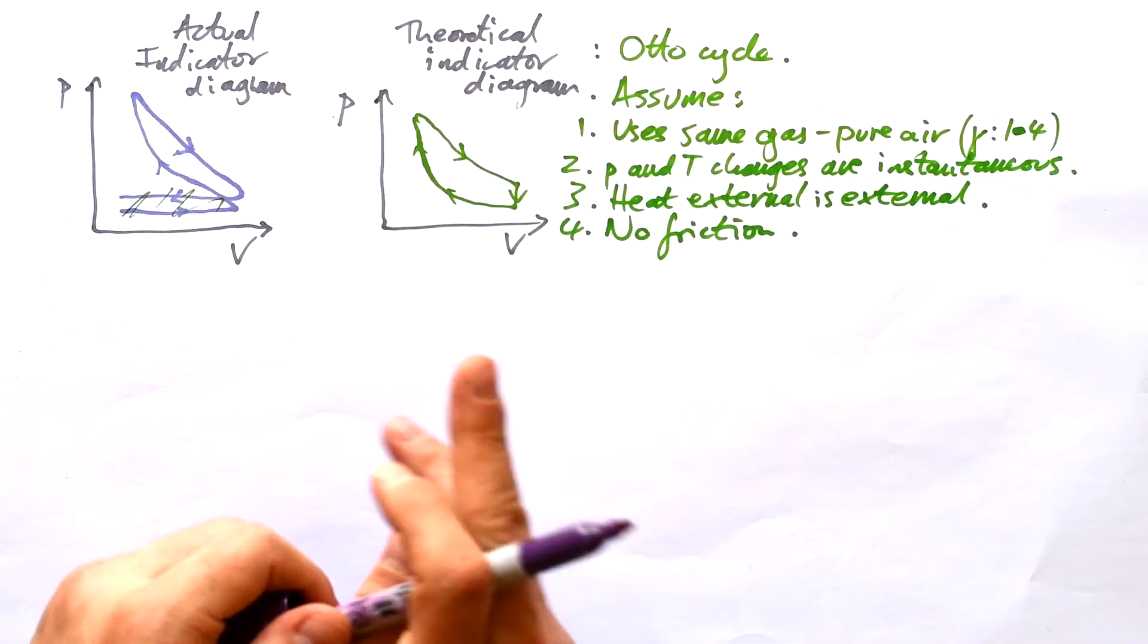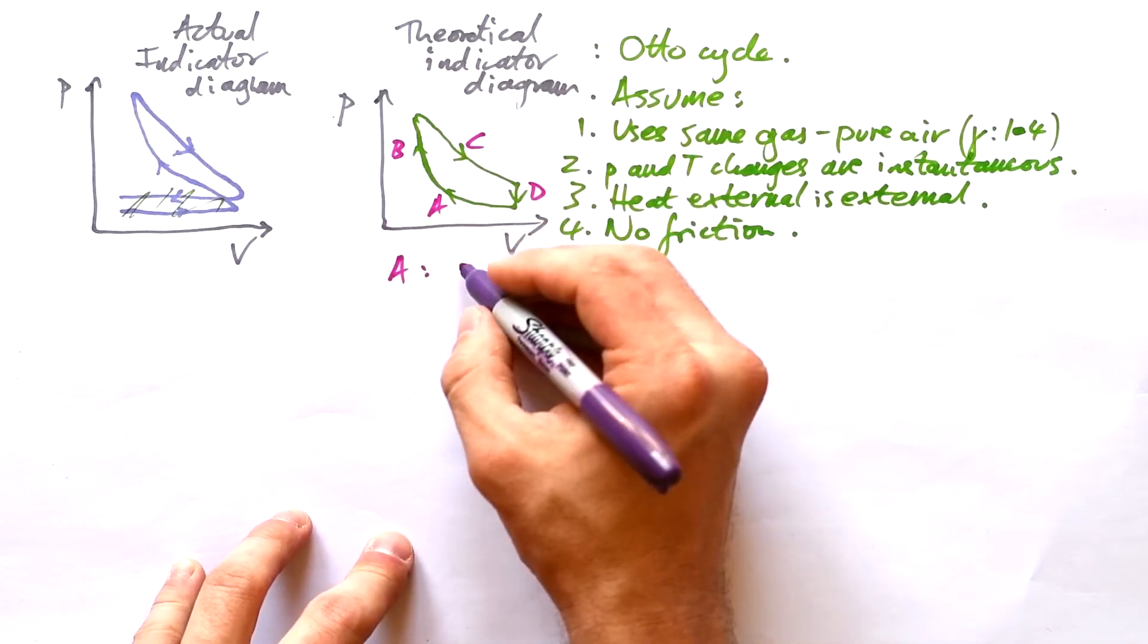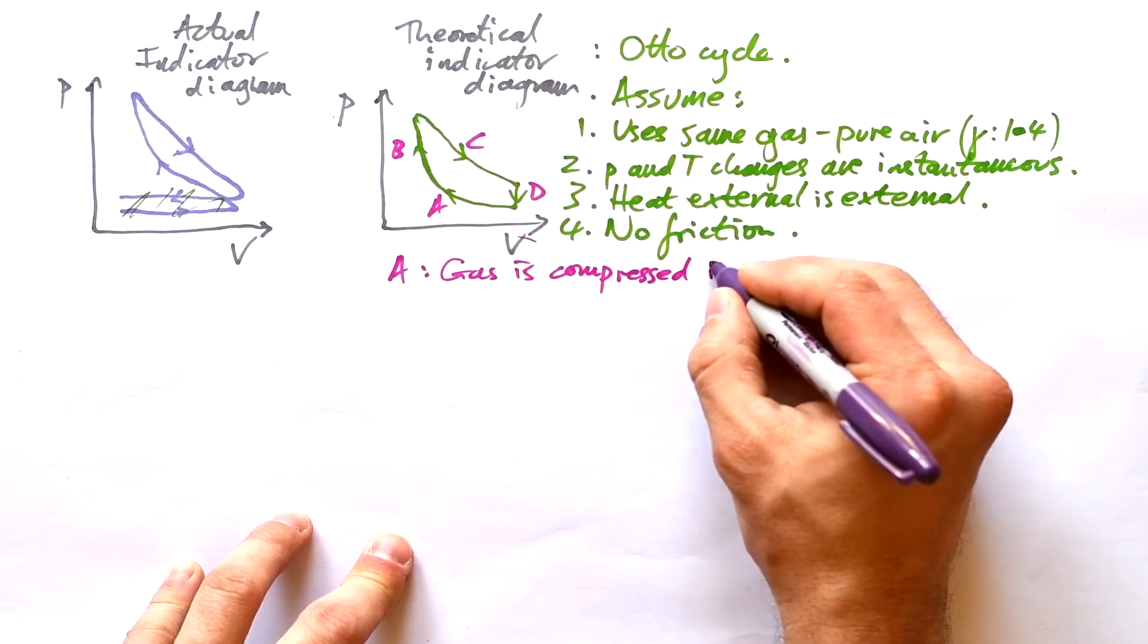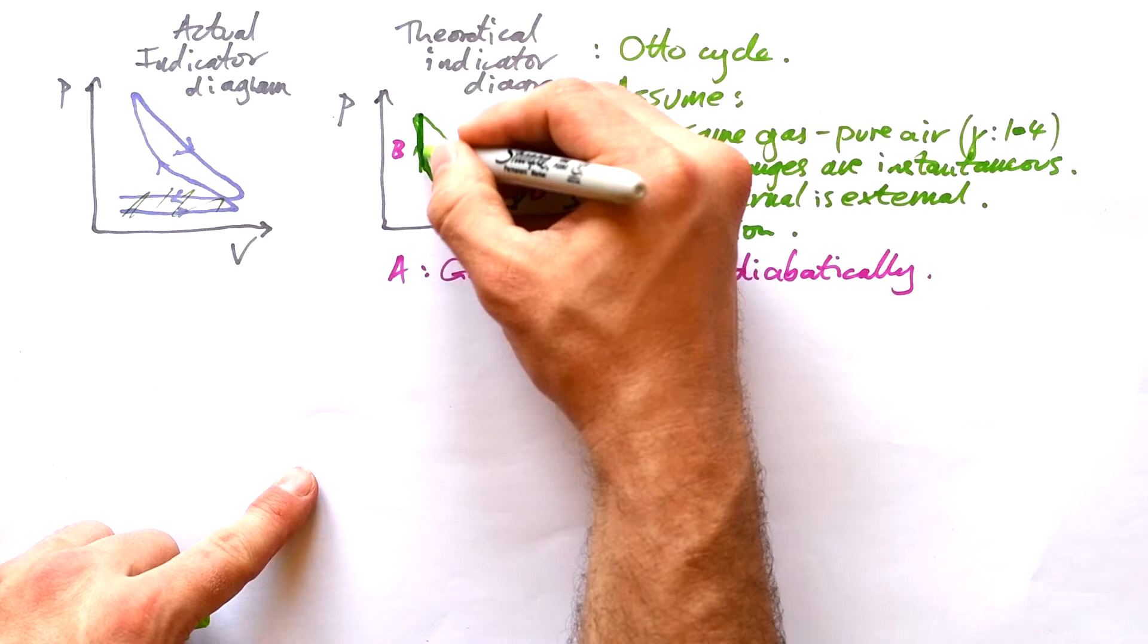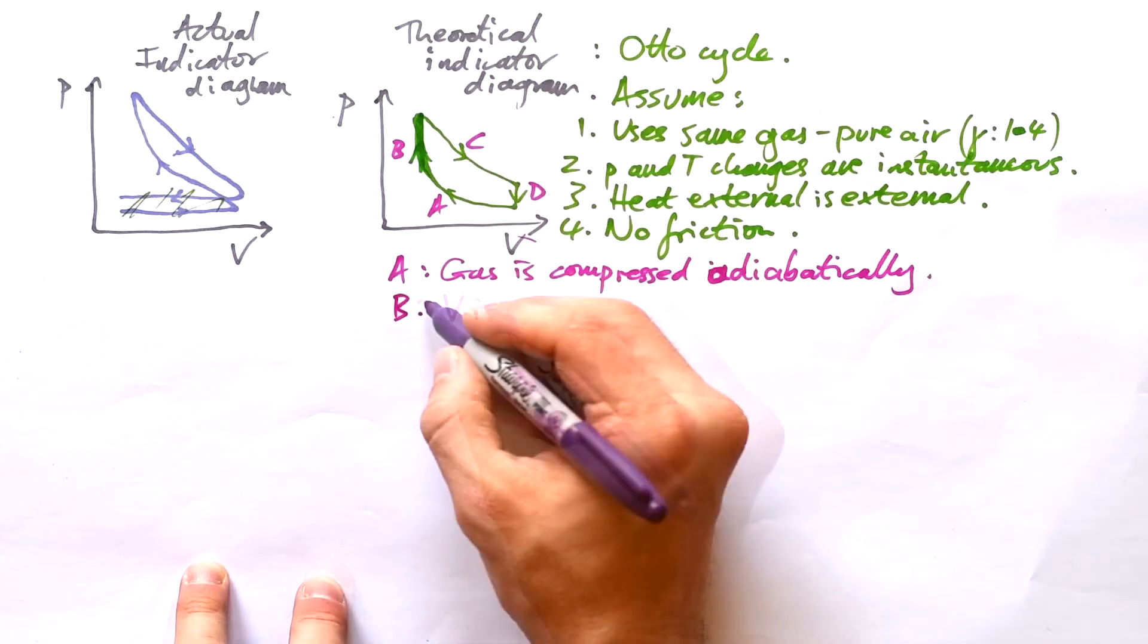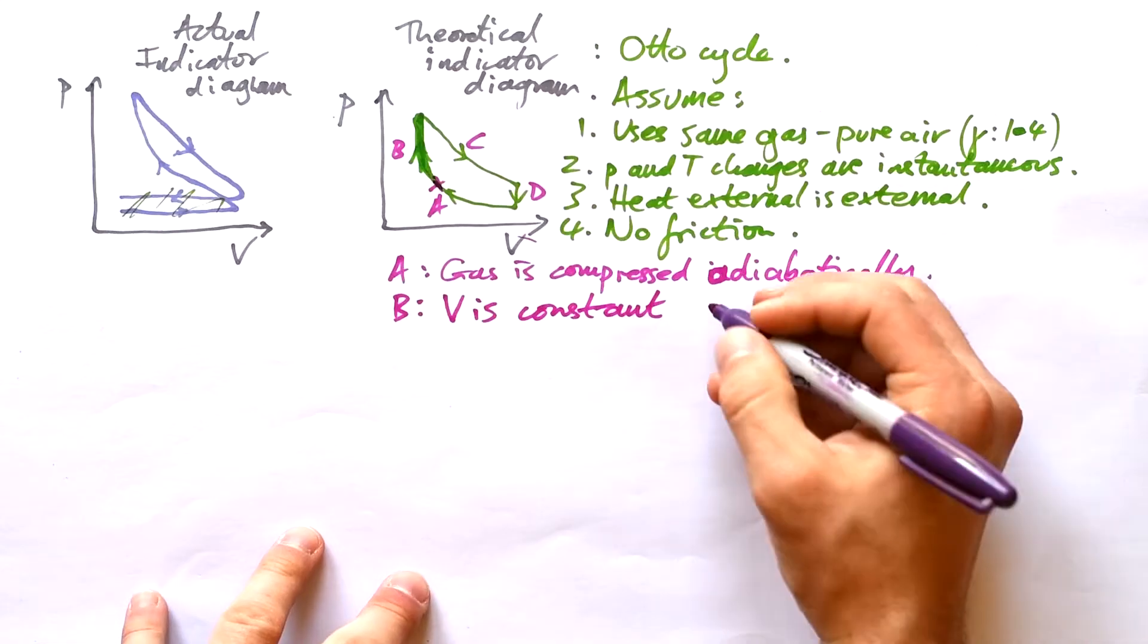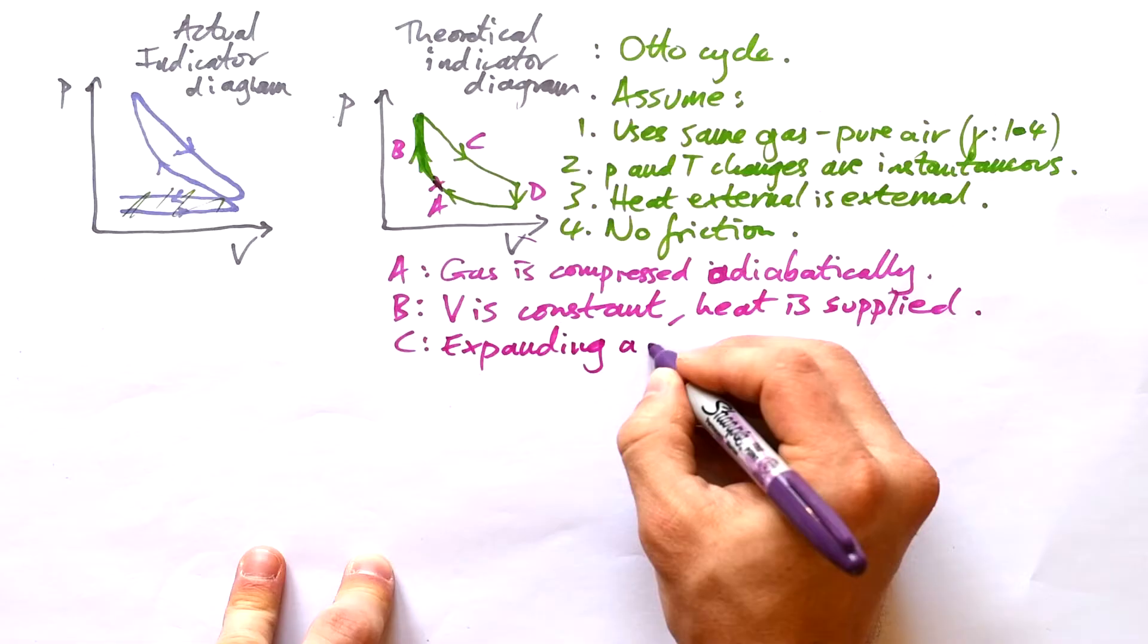So with that assumption, we can model a four-stroke engine with four processes. A, what's going on here? Gas is compressed. Is it isothermally or adiabatically? It's adiabatically. B, it should be a straight line going up like that. And so that should tell you what's going on with the volume. V is constant. And if you remember, that's when we have the spark. And so that means that a reaction is happening. So heat is being supplied.